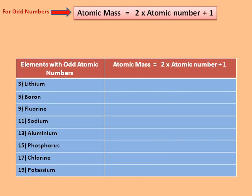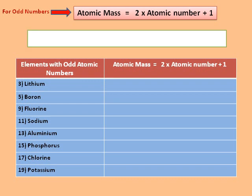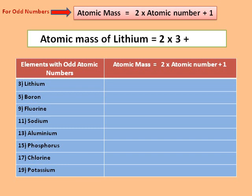Similarly, to find the atomic mass of odd numbers, we use the formula: atomic mass = 2 × atomic number + 1. Atomic mass of lithium is equal to 2 × 3 + 1 = 7.